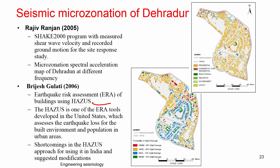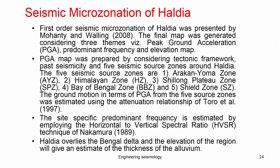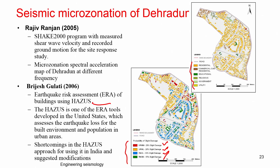HAZUS is a program which, if given the building stock, rock-level PGA, and other inputs, can produce a vulnerability index of the building depending on building type, utility such as residential, commercial, educational, religious, and government, and how much damage can be expected. This study was carried out around 2006 for vulnerability assessment. All these patches of work were done separately, and at the end they were combined to release a zonation map and risk map.